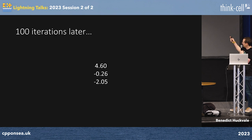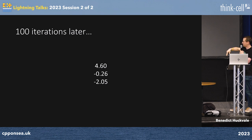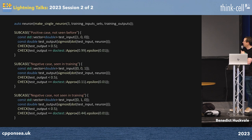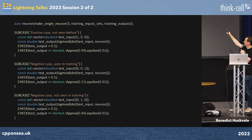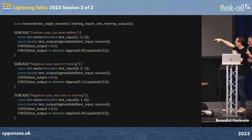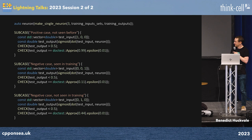A hundred iterations later I get sort of what I expect. I used transform_reduce to do the inner part of a transpose — I still needed a for loop. I've got some test cases with doctest: a positive case not seen before, a negative case, and a negative case not seen in training. And that's sort of vaguely working. All done, thanks very much.